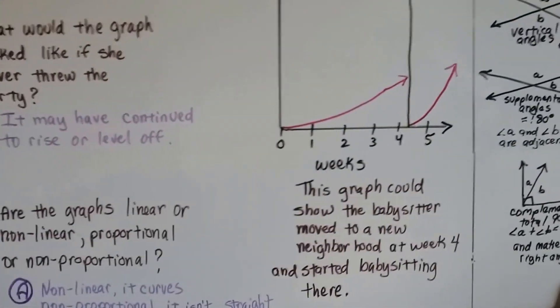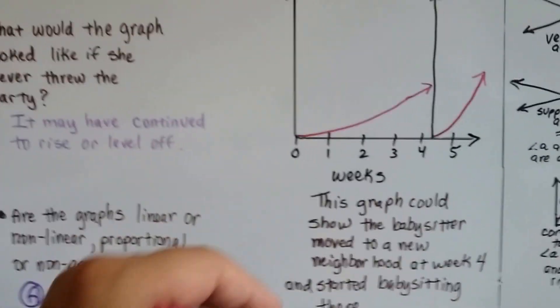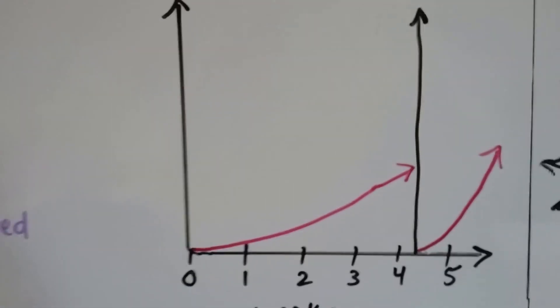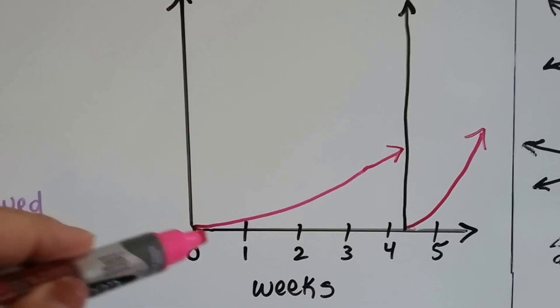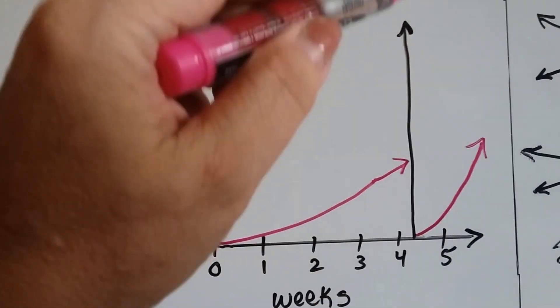Now let's look at this graph. Look at this strange looking graph right here. This one goes up and then there's a new y-axis. Look at that.